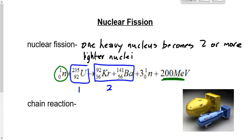Nuclear power plants are all nuclear fission power plants. The design varies by country, but the basics are the same: one heavy nucleus splits into two or more lighter nuclei, generating energy that boils water, turns it into steam, the steam rises and turns a turbine, which moves a magnet relative to a wire and generates electricity. However, the energy from this single reaction is incredibly small — maybe enough to move a speck of dust.